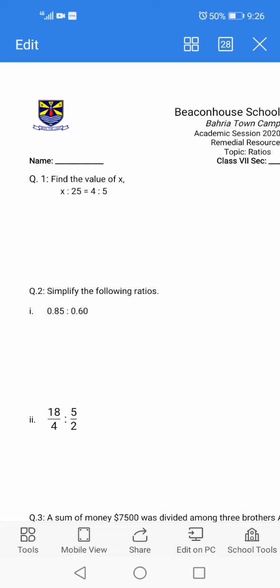To solve for the value of x, we write first quantity over second quantity equals third quantity over fourth quantity. This means we write the ratio as x over 25 equals 4 over 5. Then we do cross multiplication and this way we will find the value of x.